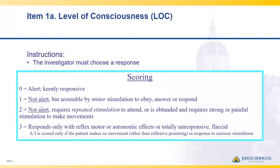The first question, number 1, is divided into A, B, and C — all relating to level of consciousness. The first part looks at your patient's response as you approach them in the room. You're looking to see: is your patient alert and keenly responsive? If they're not alert but with minor stimulation — just by touching them — they're able to talk to you and obey commands, that would be one point.